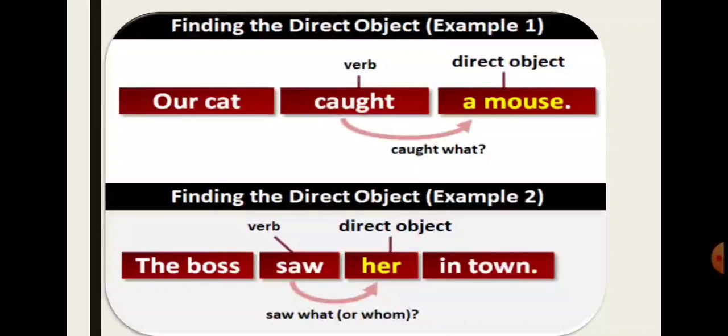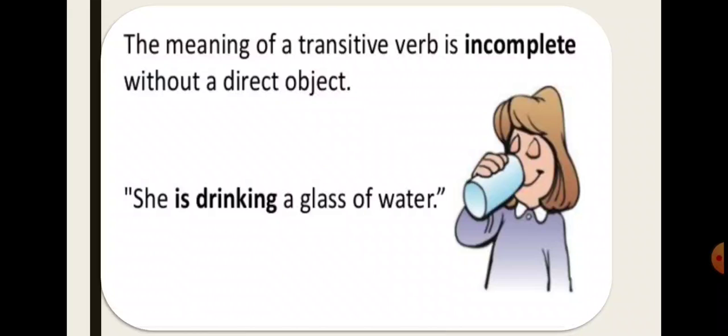So in this sentence, her is your direct object. Students, the meaning of a transitive verb is incomplete without a direct object.